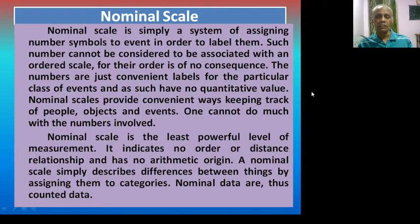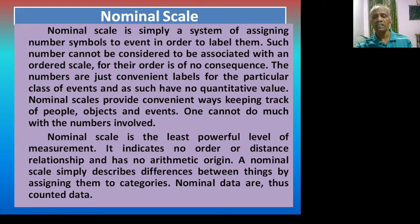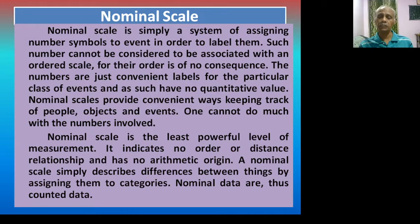A nominal scale is simply a system of assigning number symbols to events in order to label them. Such numbers cannot be considered to be associated with an ordered scale, and there is no consequence. The numbers are just convenient labels for a particular class of events and have no quantitative value. Nominal scales provide convenient ways of keeping track of people, objects, and events. Nominal scale is the least powerful level of measurement — it indicates no order or distance relationship and has no arithmetic origin. A nominal scale simply describes differences between things by assigning them to categories, and nominal data are thus counted data.